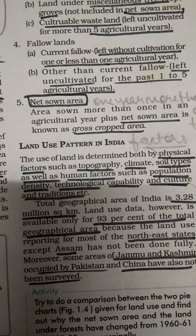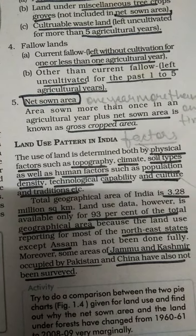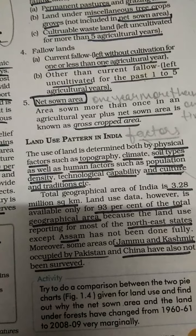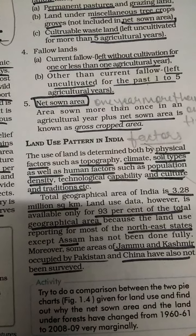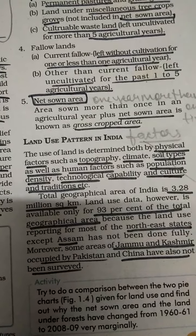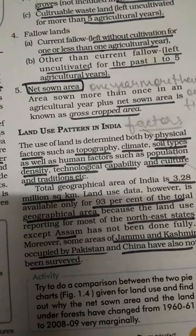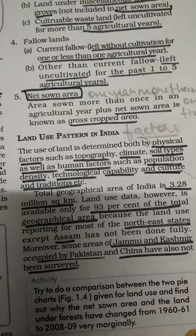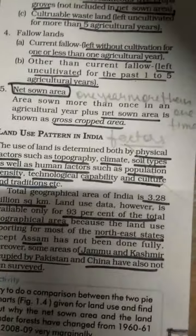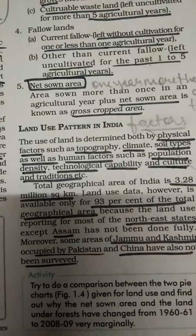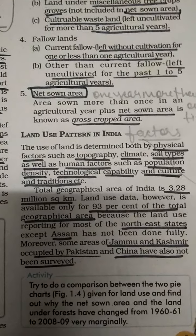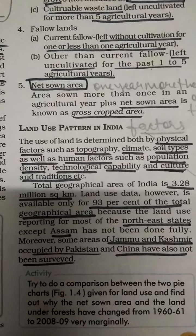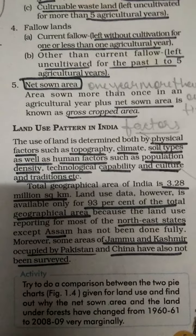Physical factors — topography (relief), climate, and soil type — greatly affect land use patterns. For example, heavy rainfall creates a different land pattern. Human factors are also significant: population density varies between Assam, Uttar Pradesh, and Goa, leading to different land use patterns. In Rajasthan, sandy desert and unsuitable climate and technology limit agriculture, whereas Punjab and Haryana have developed technology and suitable conditions, enabling more agricultural output.